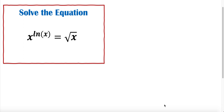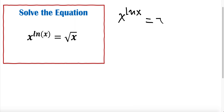We have the equation x to the exponent ln x equal to the square root of x. Let me rewrite: x in exponent ln x is equal to the square root of x.